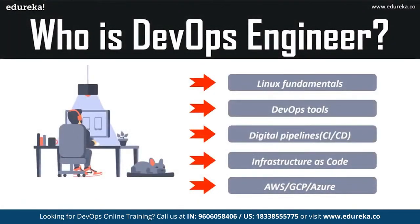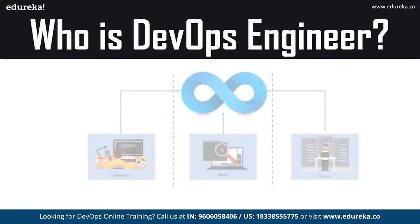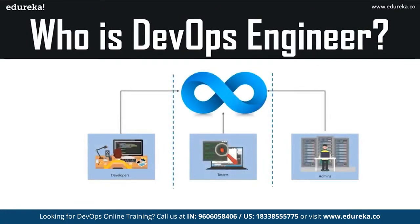A DevOps engineer is somebody who understands the software development lifecycle and has a thorough understanding of various automation tools for developing digital pipelines or CI/CD pipelines. A DevOps engineer works with developers and IT staff to oversee code releases. They are either developers who get interested in deployment and network operations, or system administrators who have a passion for scripting and coding and move into the development side to improve the planning of tests and deployment.